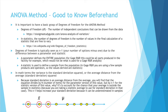Before we jump into our example, it's good to have a grasp of what degrees of freedom means, because that is one of the terms in the ANOVA method. Degrees of freedom is the number of independent conclusions that can be drawn from the data. In statistics, the number of degrees of freedom is the number of values in the final calculation that are free to vary. You'll typically see the formula for degrees of freedom as n minus 1. The reason you subtract 1 comes down to the difference between a parameter and a statistic.